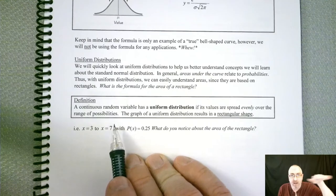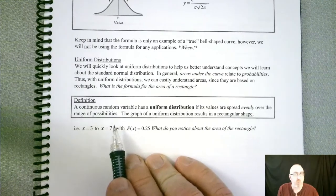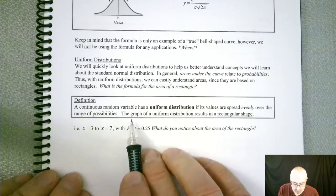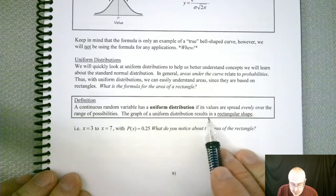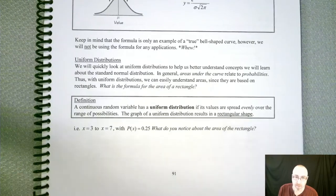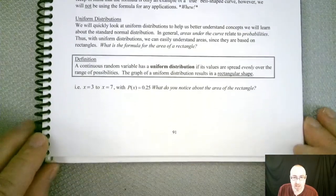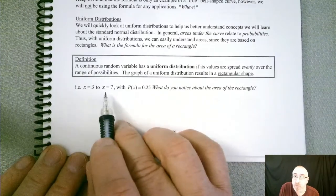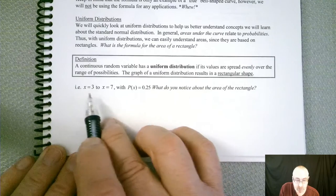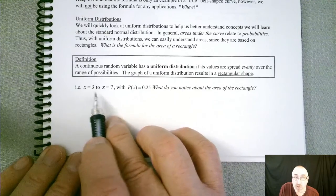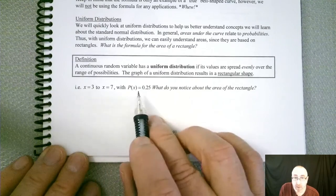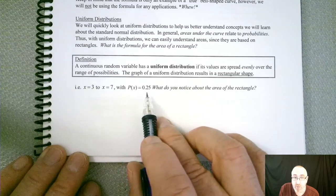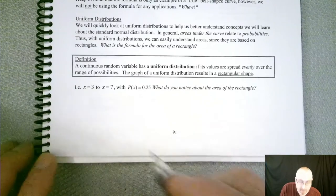So let us take a look at some of the conditions. A continuous random variable has a uniform distribution if its values are spread evenly over the range of possibilities. So again, it is approximately level across. But in this case, we are going to say it is perfectly level. The graph of a uniform distribution results in a rectangular shape. So let us take a look at a specific example. So they are going to give you the boundaries of your uniform distribution. In this case, we want x to go from 3 to 7, and the probability to be 0.25. So let us draw a picture of it. Pictures are going to be very important in this chapter.